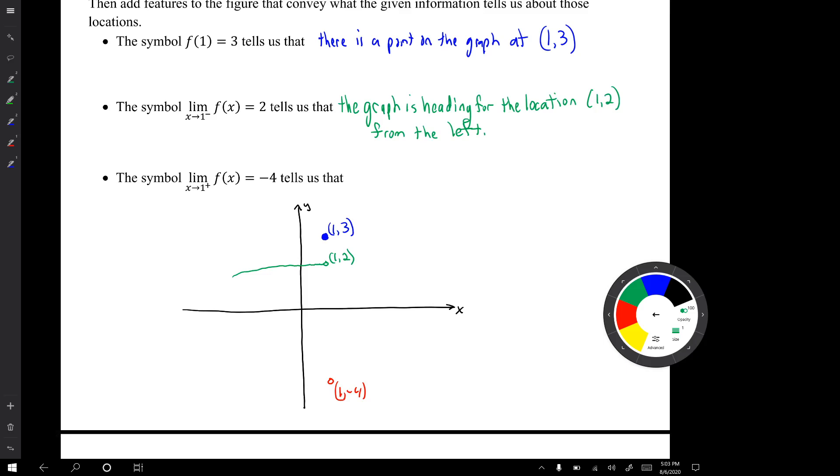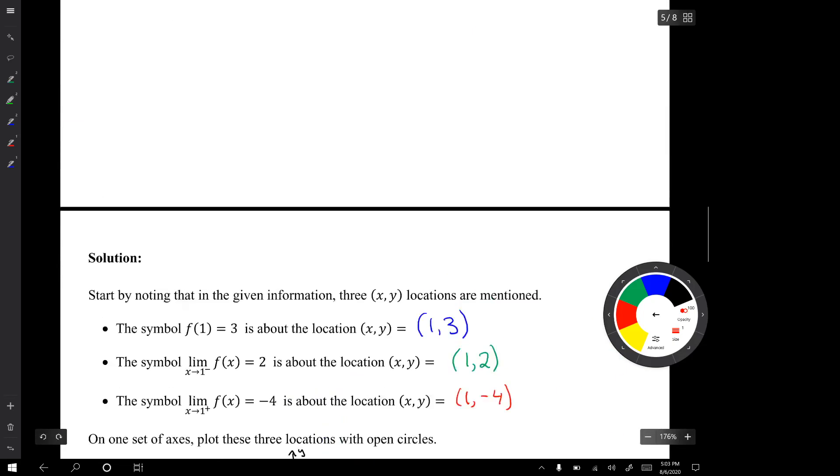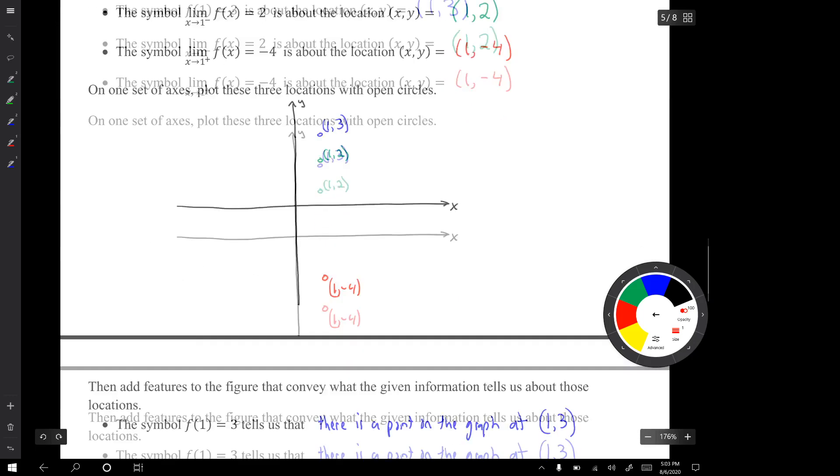Now the symbol limit as x approaches 1 from the right equals negative 4 tells us that the graph is heading for the location (1, -4) from the right. So we can convey that by adding this feature, just add a pigtail that's heading for (1, -4) from the right. So there's our graph with the given information, those three conditions satisfied.